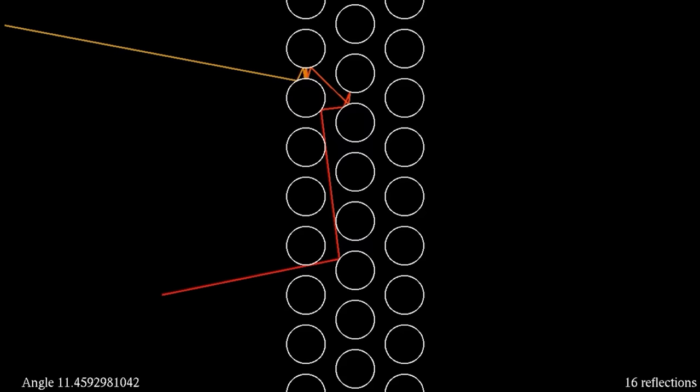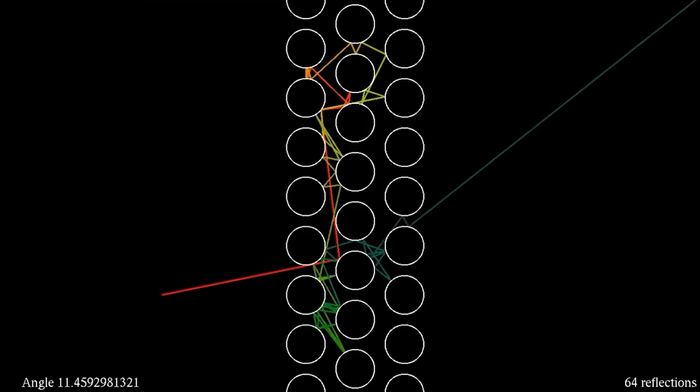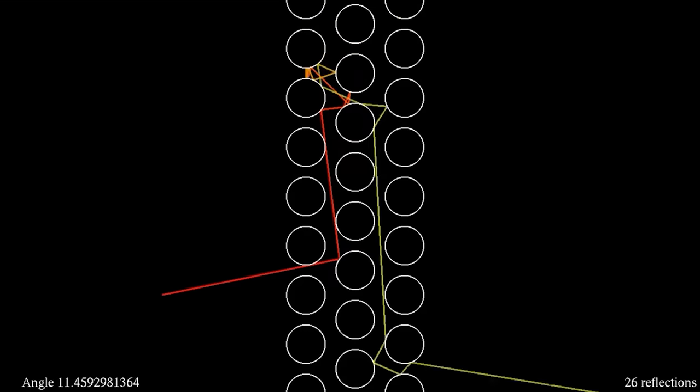But this tiny change in angle results in a huge change in where the laser ends up in its output. So this is a great example of the butterfly effect. Look at that - a seemingly insignificant change in angle completely flipped the direction in which the laser exits the cylinders.